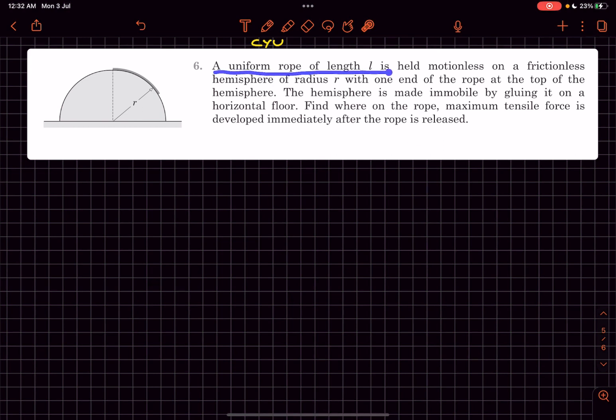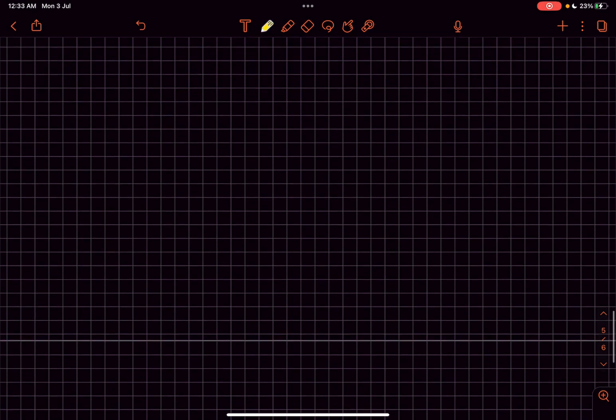We have been given a uniform rope of length l held motionless on a frictionless hemisphere with one end of the rope at the top. The hemisphere is made immobile by gluing it on the horizontal floor. Find where on the rope maximum tensile force is developed immediately after the rope is released.